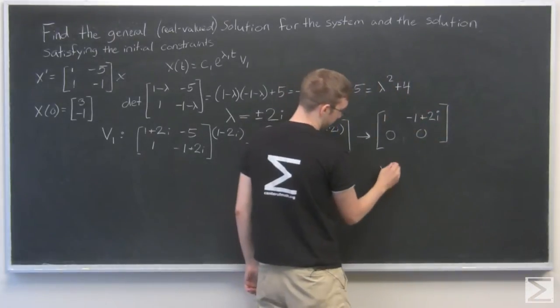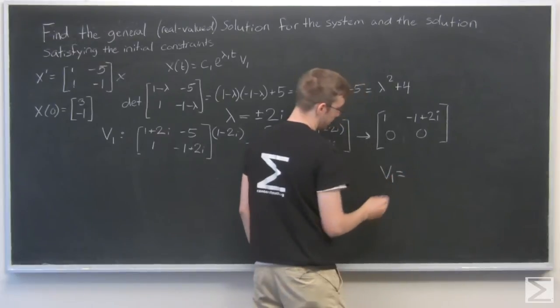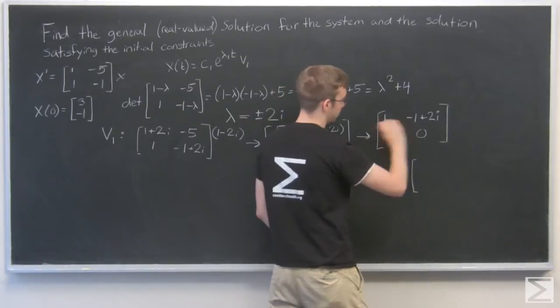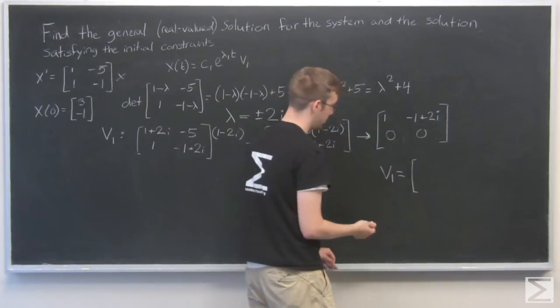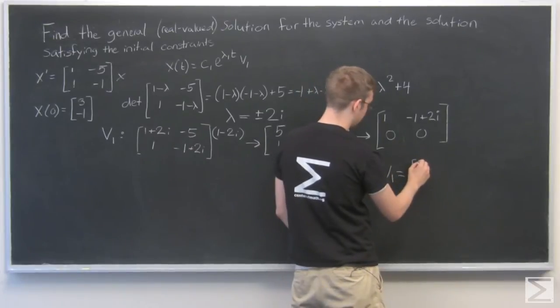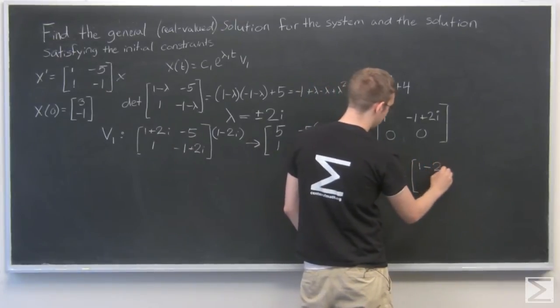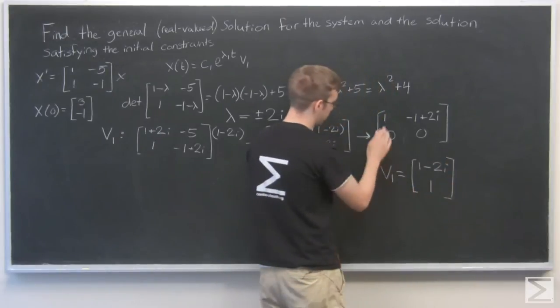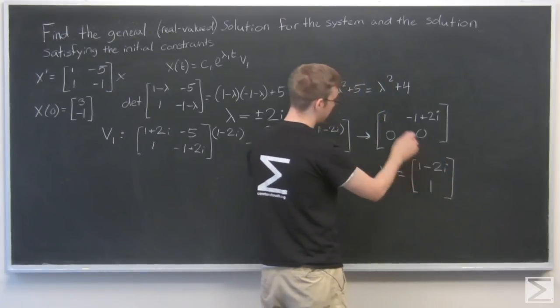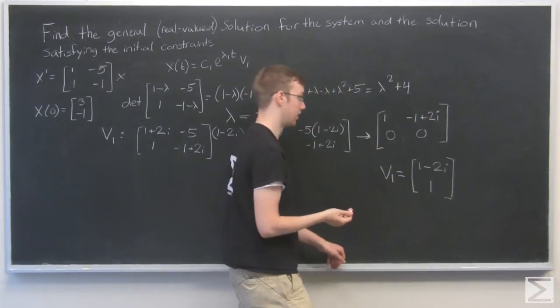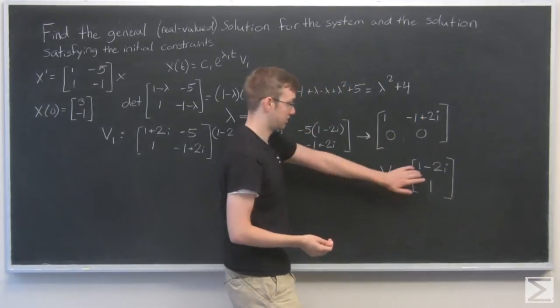Okay, so from here I can find my v1. I want the product of this times my v1 to equal 0. So my v1 I'm going to have [1-2i, 1], because 1 times (1-2i) plus (-1+2i) times 1, that's going to give me 0. And that's the goal. So my vector 1 is this right here.